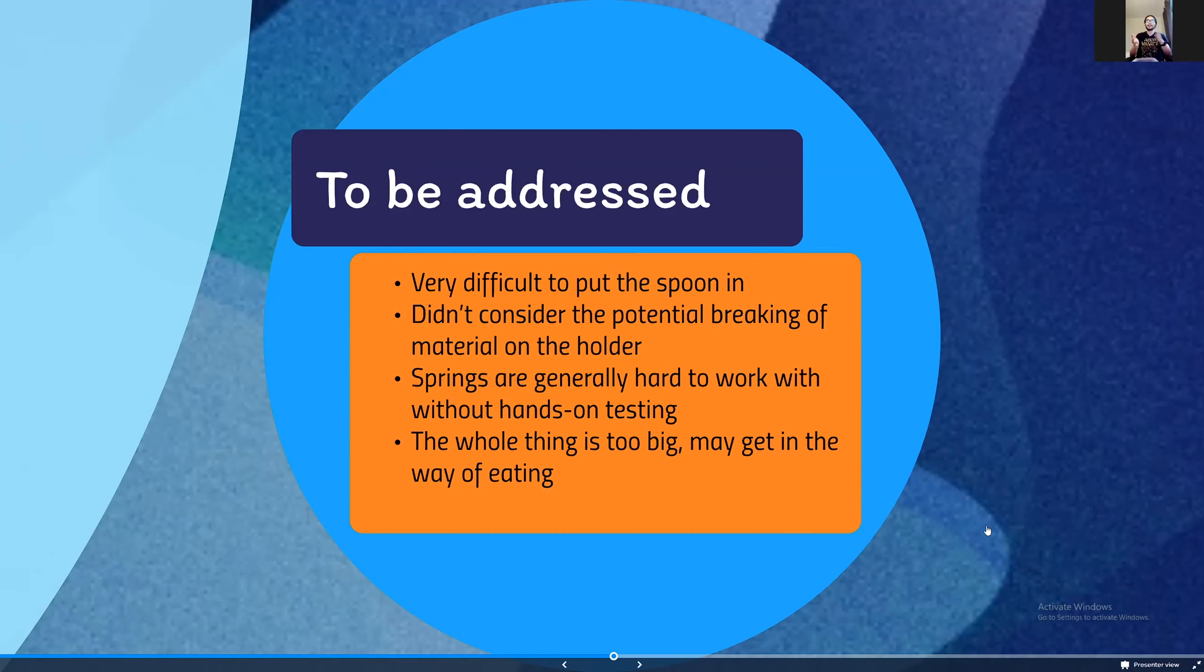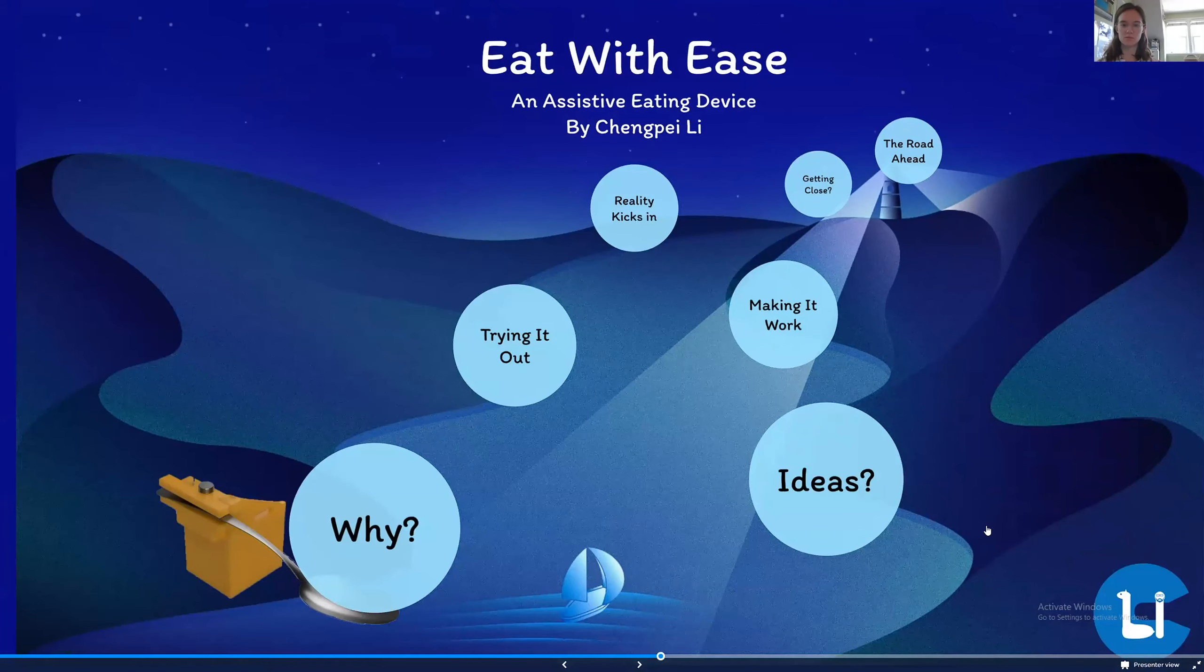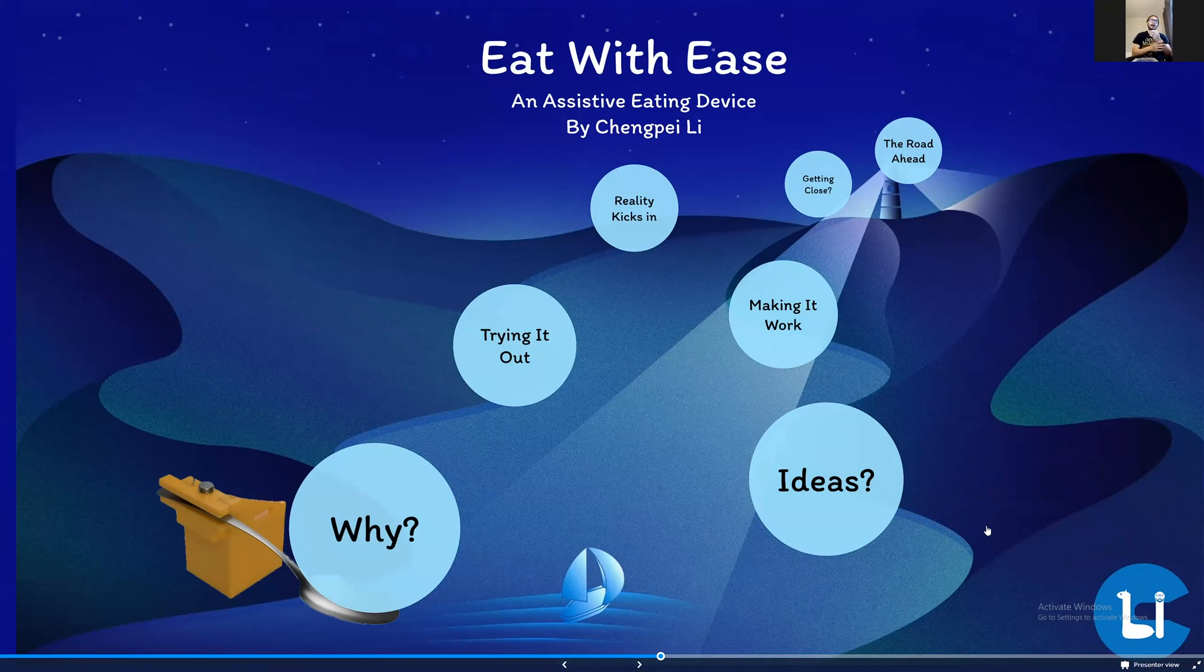Springs in general are kind of hard to work with. Without actual testing I have to determine the amount of forces applied, and everything is just kind of a mess. The final point I noticed is that the whole thing is too big. There was one time when I was trying to go for the bottom of the bowl and it did get in the way. Those are some of the problems I was trying to address in the next step when I'm trying to actually print this in CAD.